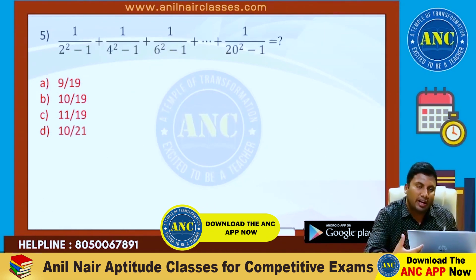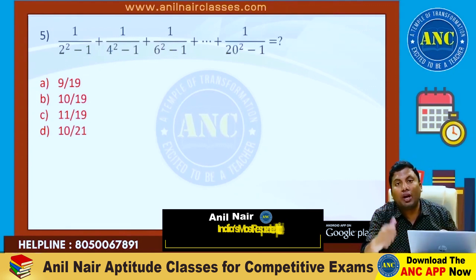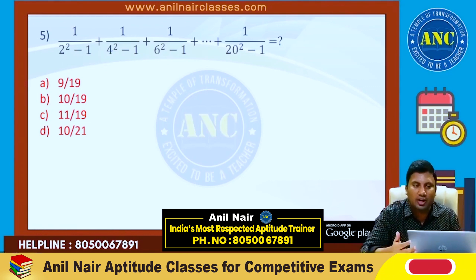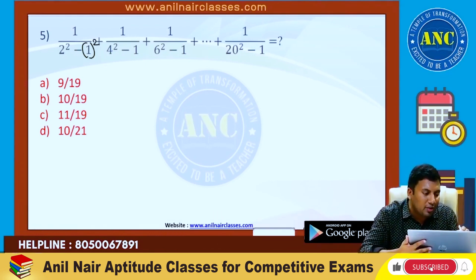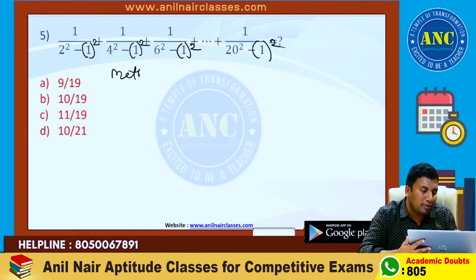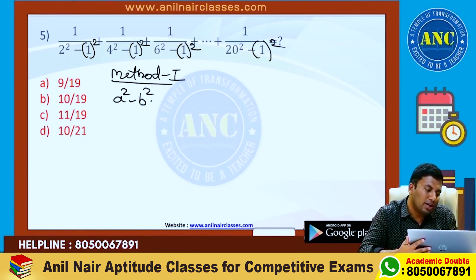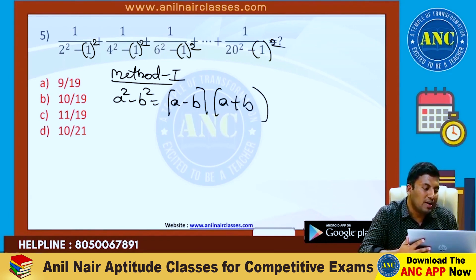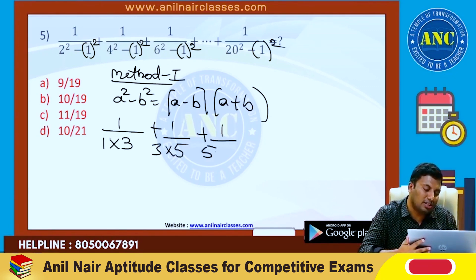Fifth one. See here: 1 by 2 square minus 1, plus 1 by 4 square minus 1, and so on. For those preparing for the CAT exam, this is an original CAT question. Now, 1 can be written as 1 square. Method 1: A square minus B square logic. A square minus B square is A minus B into A plus B. Using this logic: 1 by (2 minus 1)(2 plus 1), then 1 by (4 minus 1)(4 plus 1), then 1 by (6 minus 1)(6 plus 1), up to 1 by (20 minus 1)(20 plus 1).